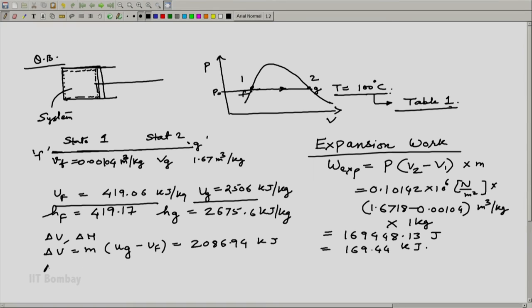Similarly, delta H is nothing but M into HG minus HF which is nothing but M into HFG which is equal to 2256.4.